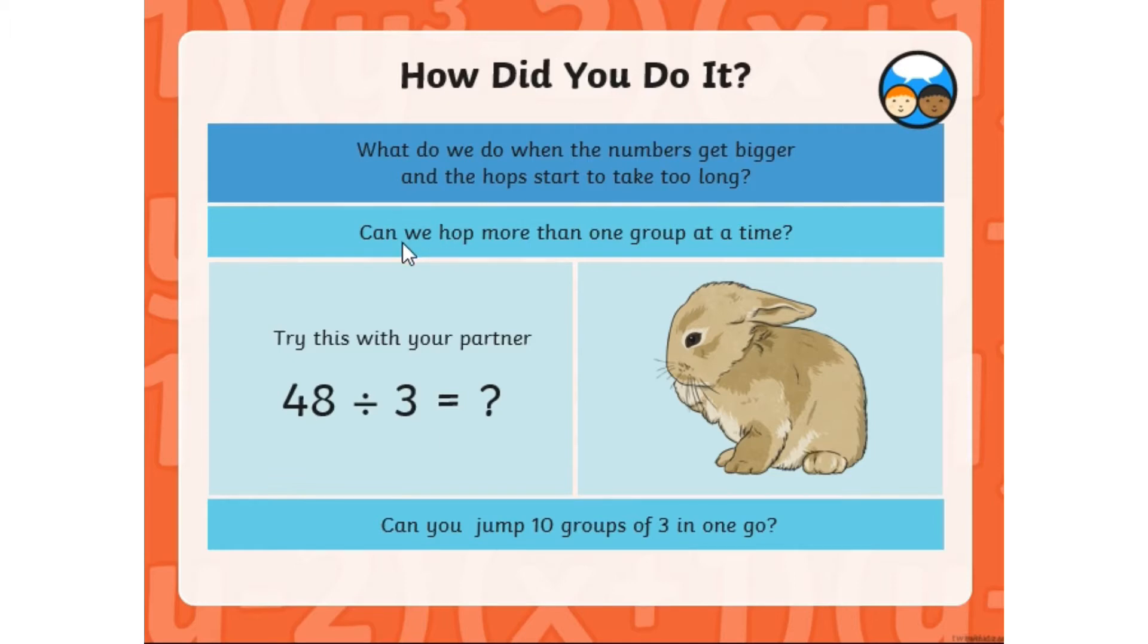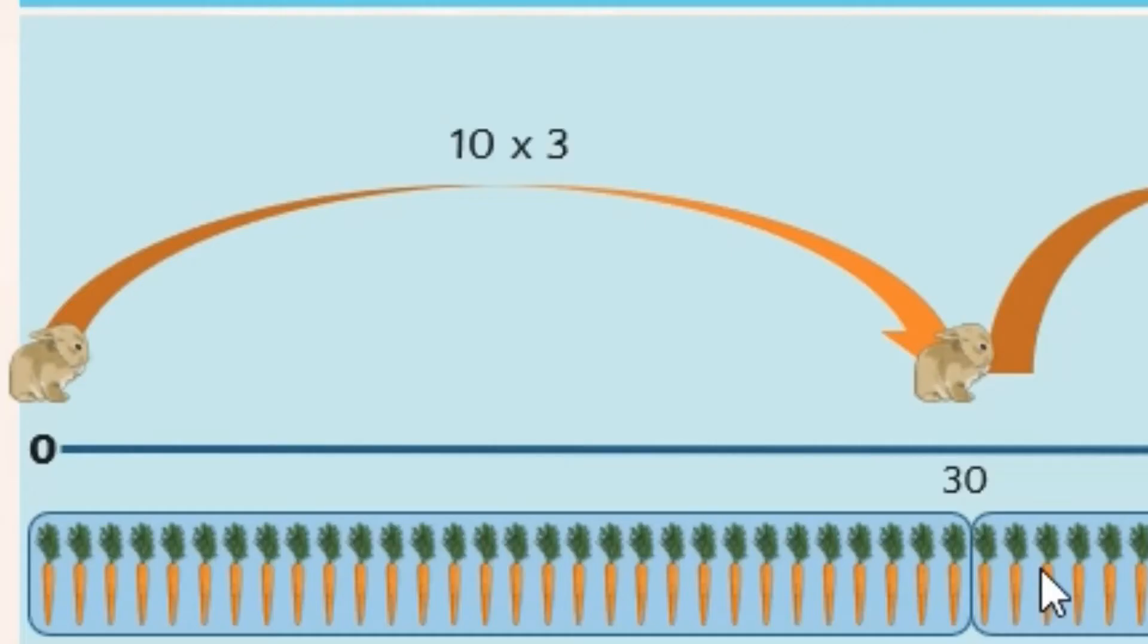Look at this example: 48 divided by 3. It suggests jumping 10 groups of 3 in one go. 10 groups of 3 equals 30. We know how much that is, so we can use that known fact to speed us up. So our bunny can do one big jump all the way to 30.